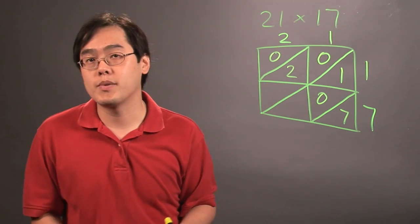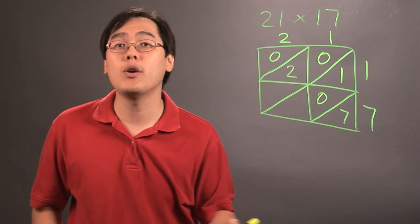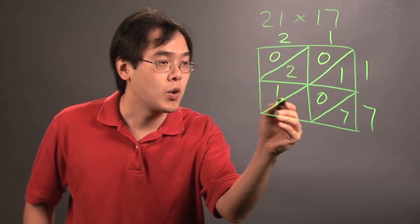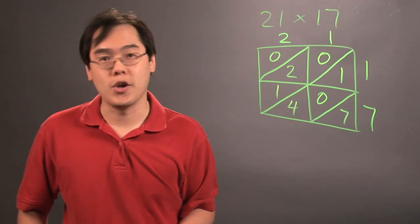Now, this is where things become a little bit more interesting, because when you have two times seven, you have 14, so now you have a true two-digit number, so it'll be one, four, like so.